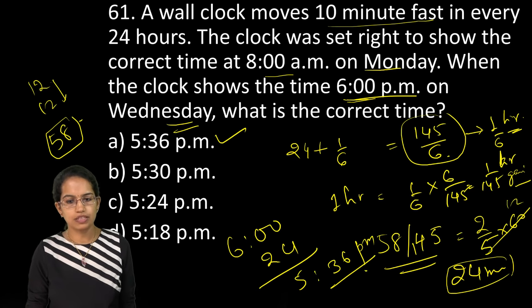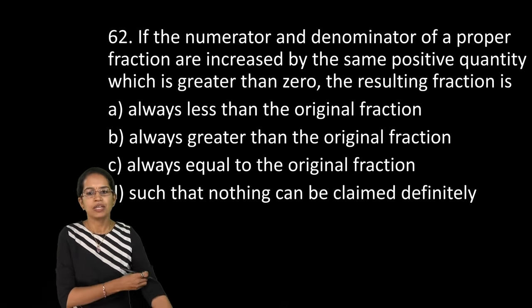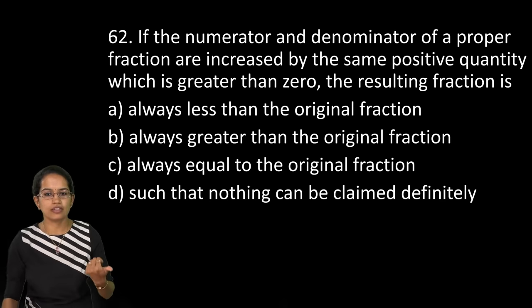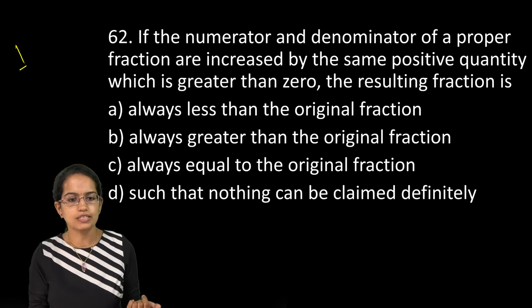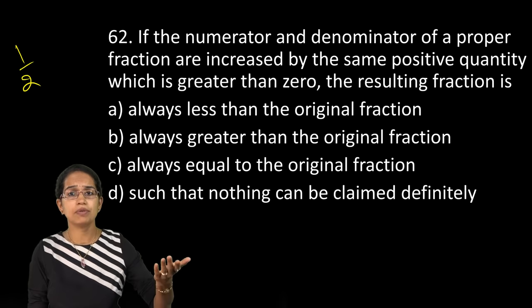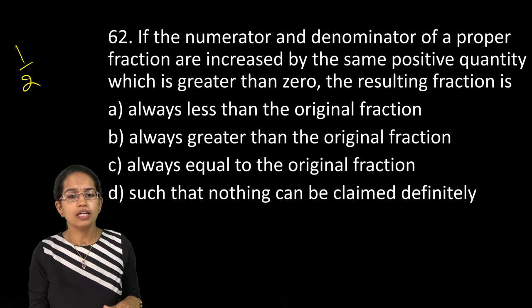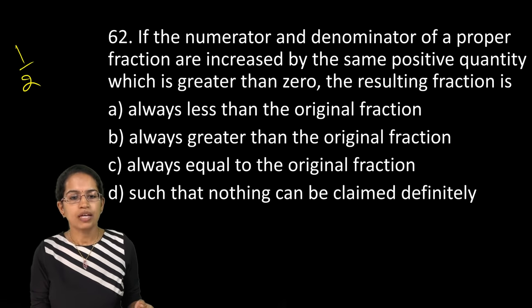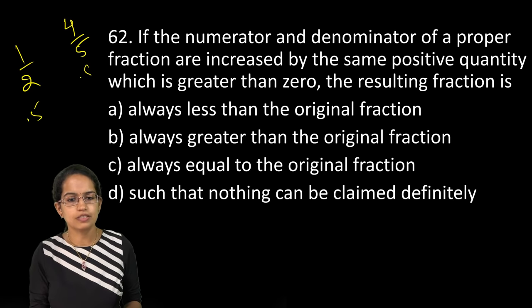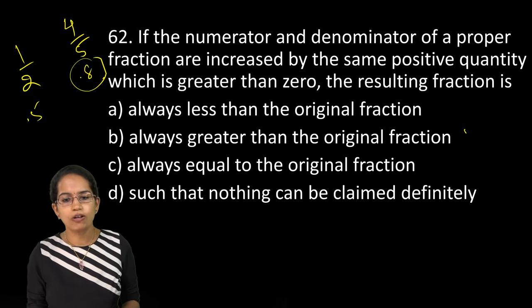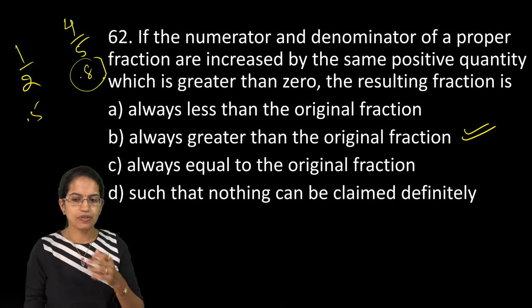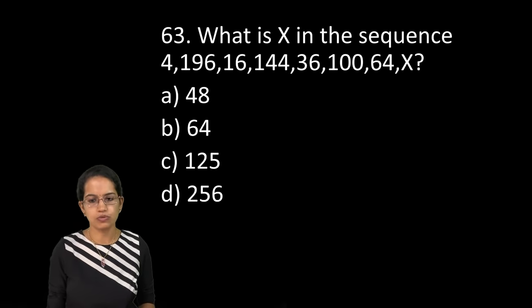The next question is numerator and denominator as a proper fraction. So let's say 1 by 2. I add same number to the numerator and the denominator. So let's say I add 3, it becomes 4 by 5. When I simplify it's 0.5 and it's 0.8. So it would be always greater than the original fraction. You can solve it for any other combinations that you want.